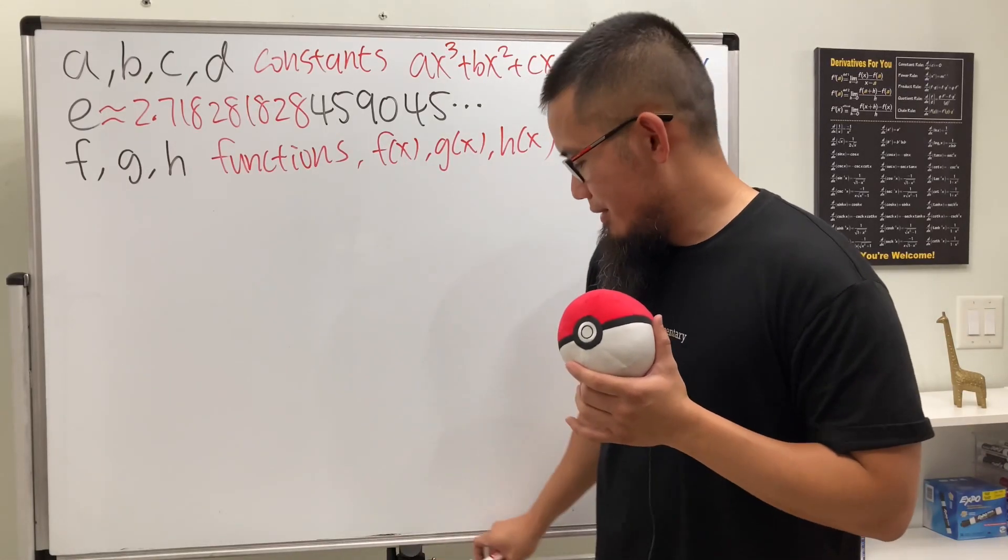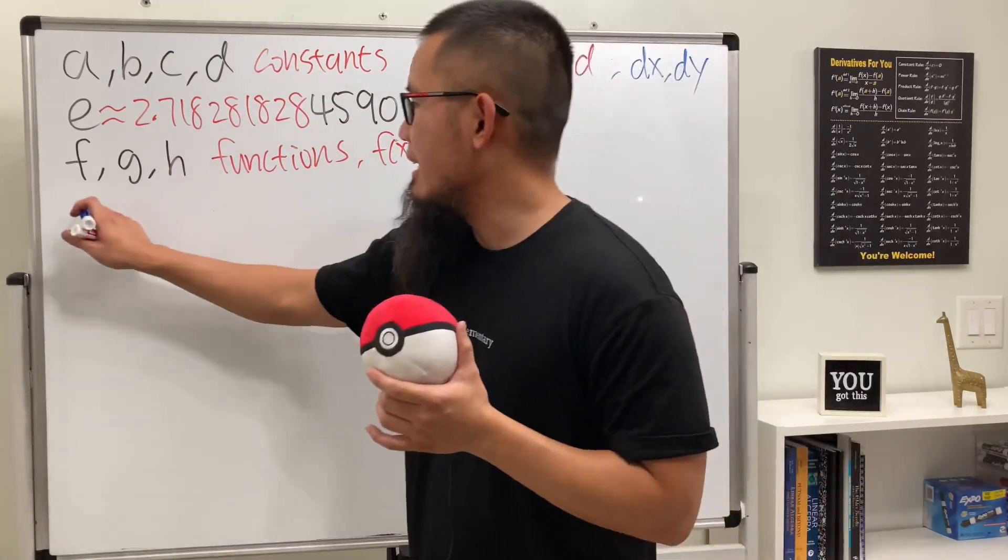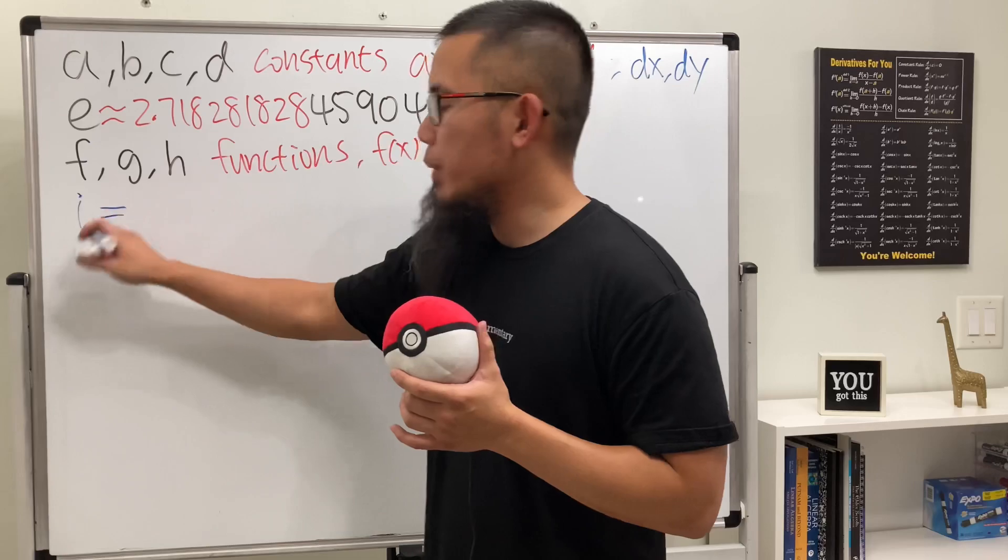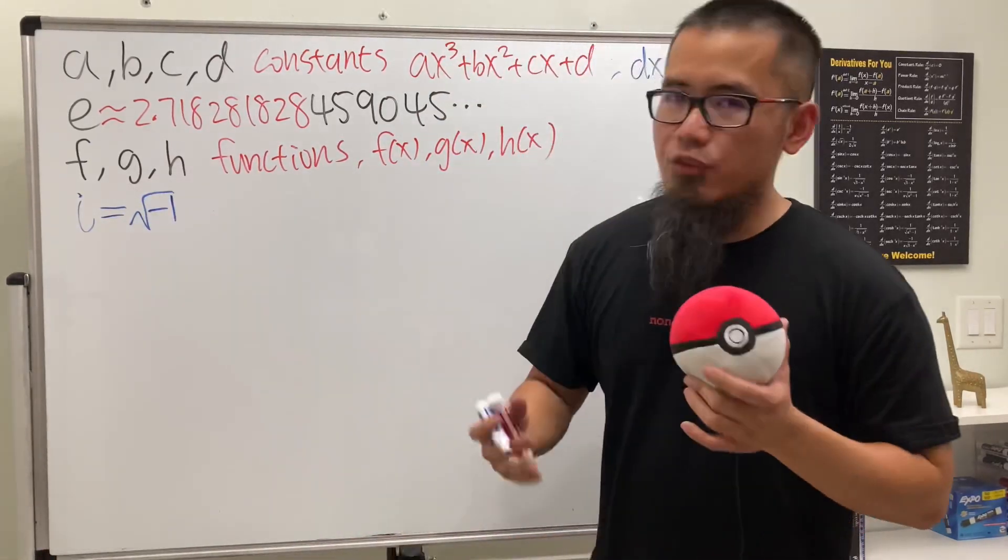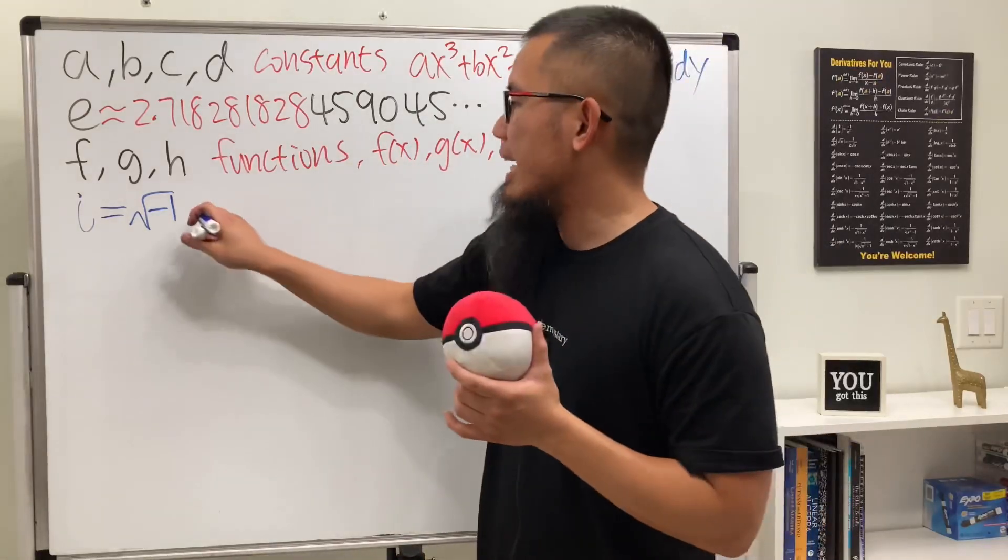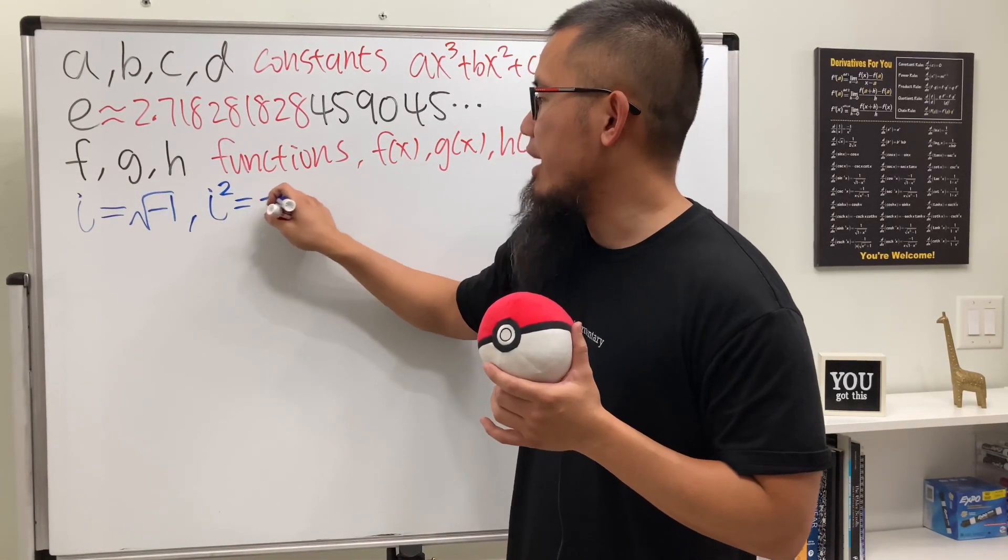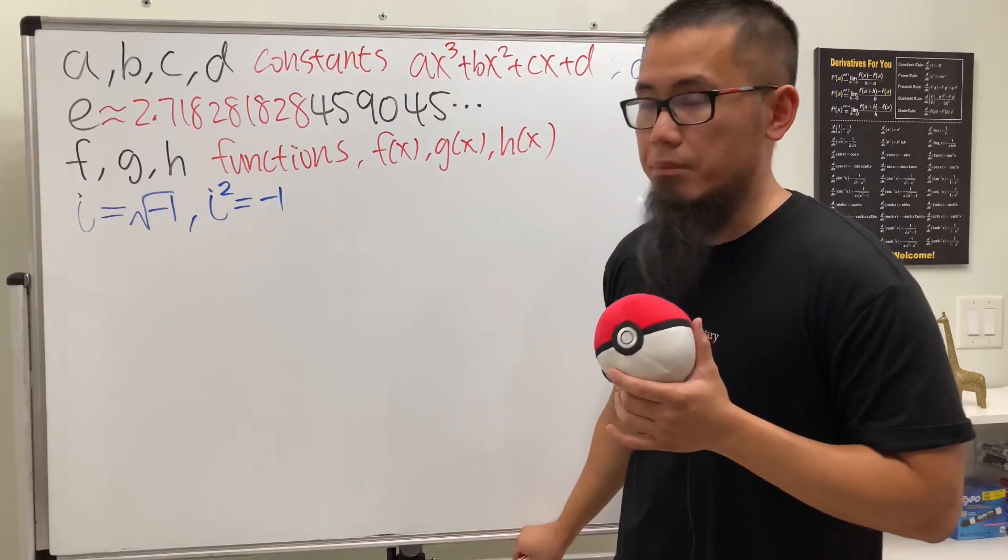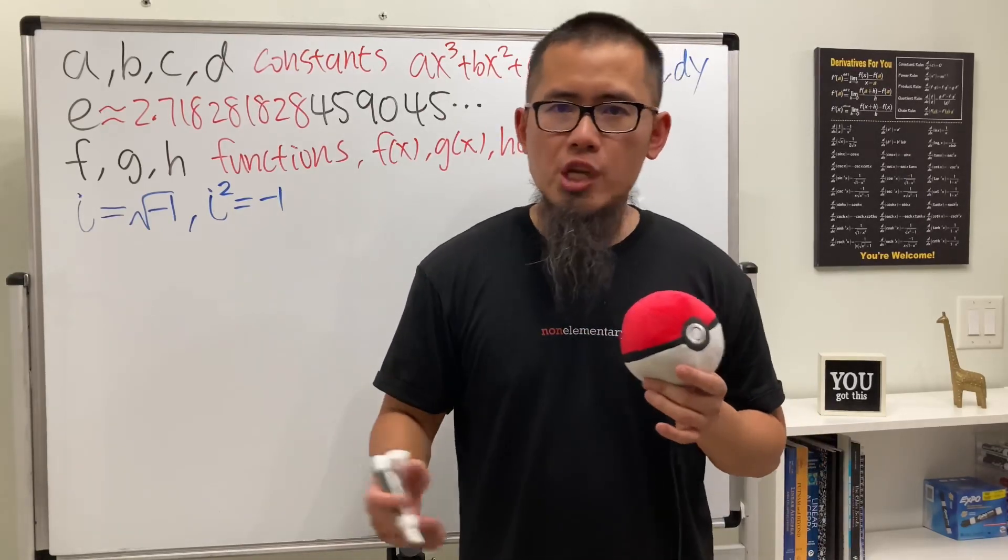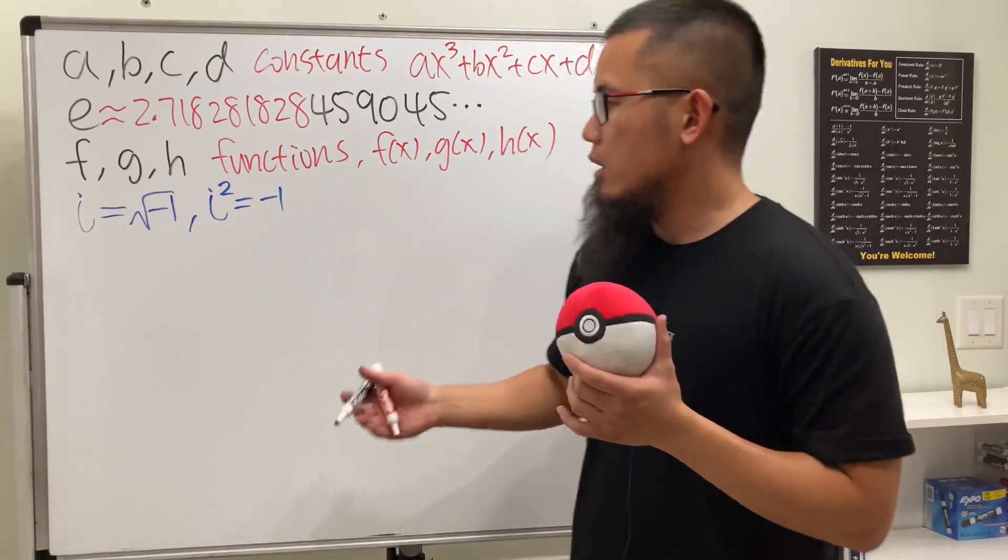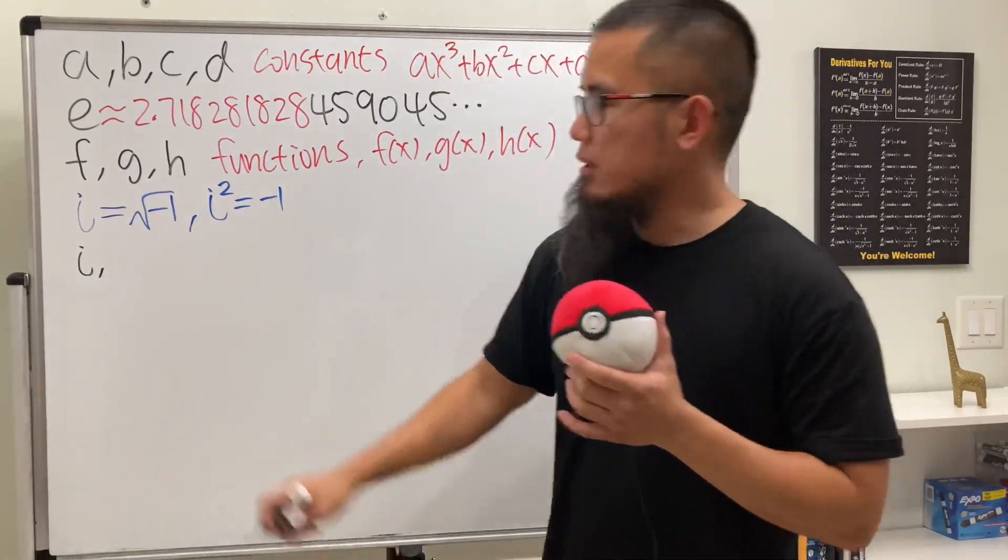Next we have i, which deserves its own role: the imaginary unit, square root of negative one. But to be technical, you should say that i is the number so that when you square it you get negative one. If you don't want to work with imaginary numbers or complex numbers, then if you look at i and its neighbors...